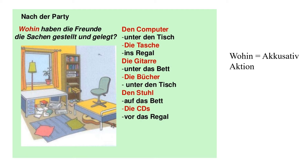The articles are in Akkusativ after the preposition. Wohin haben die Freunde die Gitarre gestellt? The guitar was previously on the wall, and now it is under the bed — unter das Bett. No change in the article — das Bett remains das Bett. Die Bücher — die Bücher sind unter den Tisch. Der Tisch changes to den. Wohin haben die Freunde den Stuhl gestellt? The chair was in front of the table and now it is on the bed — auf das Bett. No change in the article. Article changes only for the masculine noun, not for the neutral and feminine nouns.